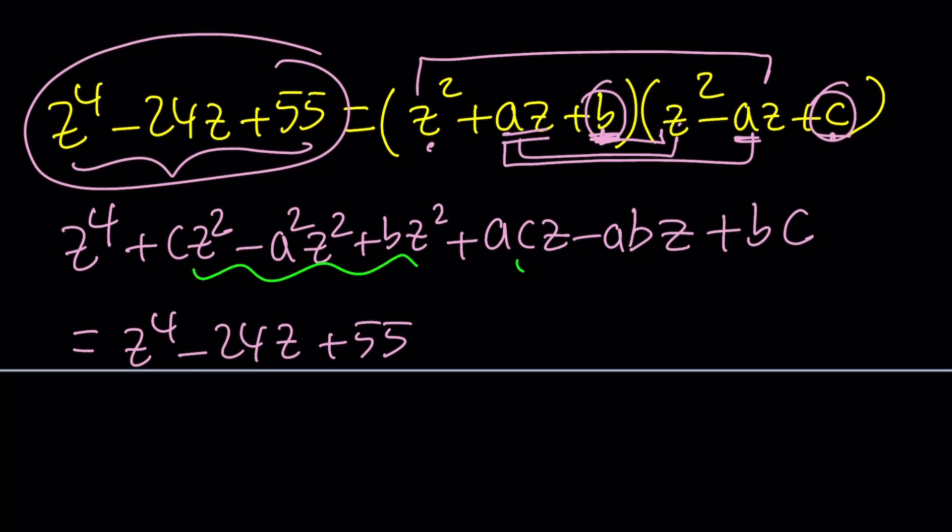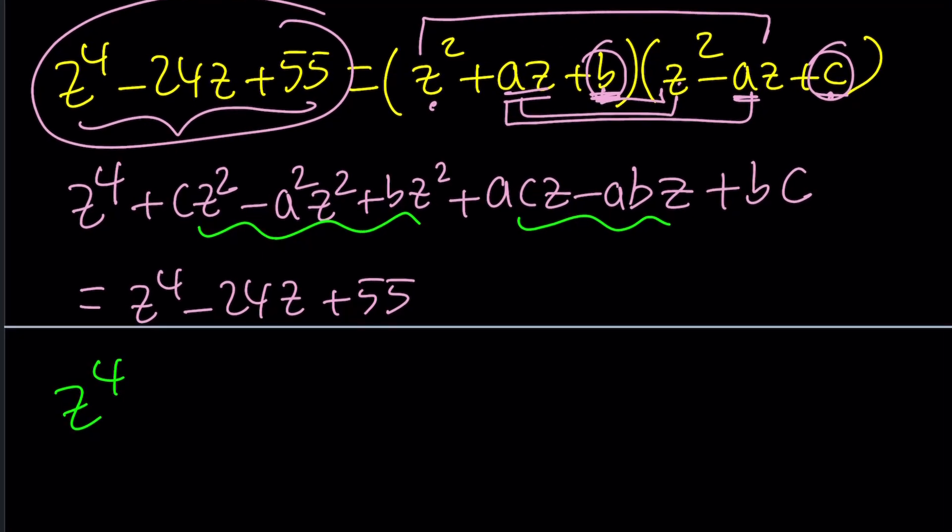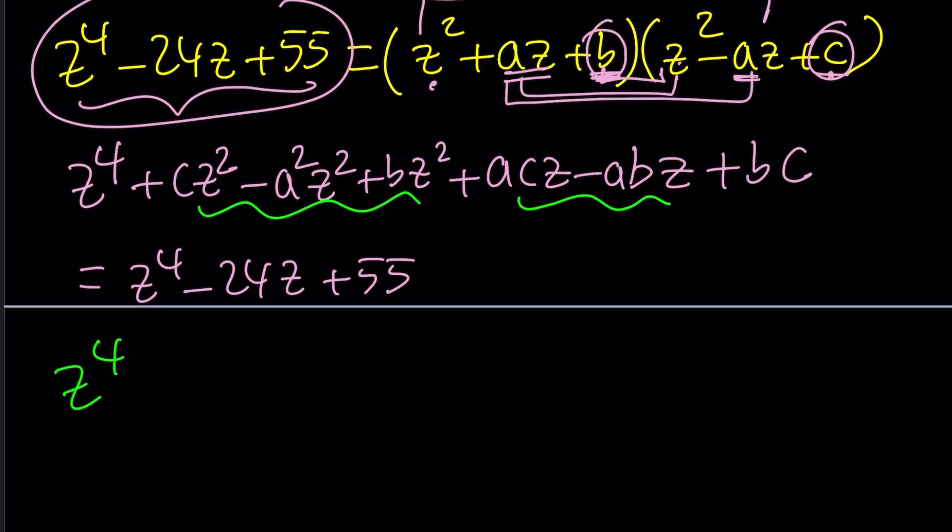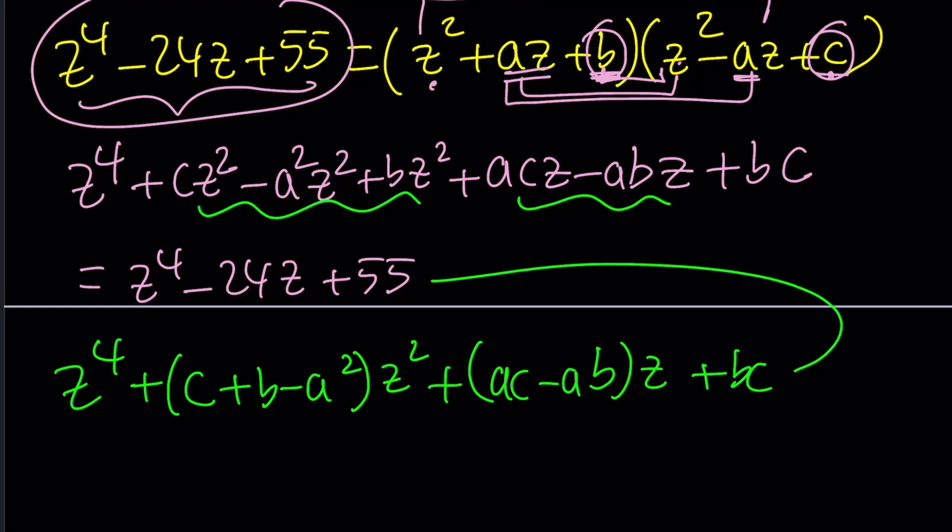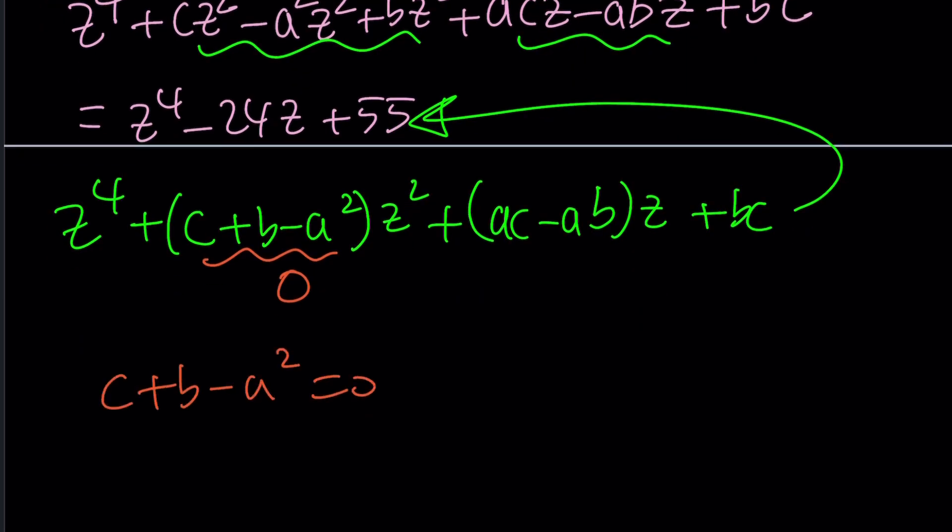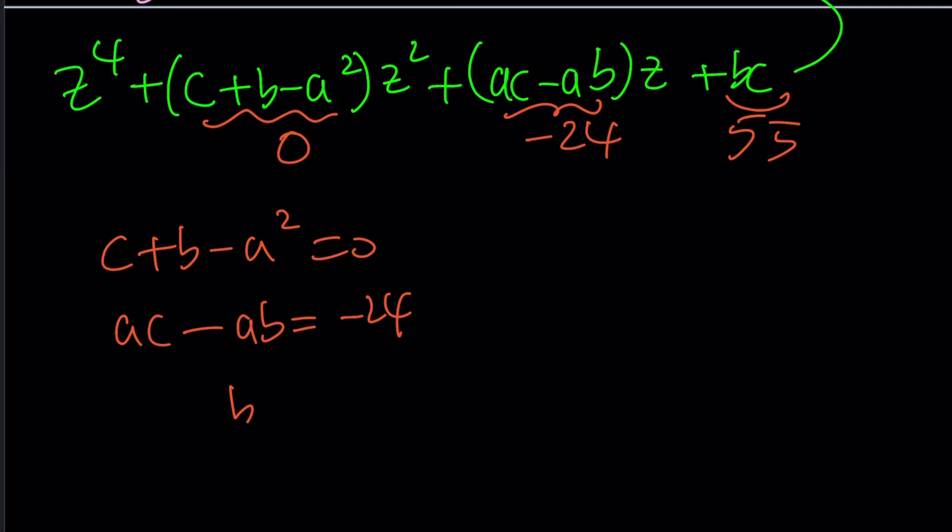Now let's go ahead and put these together. Z to the fourth. I could probably write it as c plus b minus a squared z squared, and then plus ac minus ab times z plus bc. And it's equal to that. Now notice that the coefficient of z to the fourth is one on both sides. The coefficient of z squared is zero. So c plus b minus a squared is equal to zero. The coefficient of z is negative 24, which means ac minus ab is negative 24. And the constant is 55. So bc is 55.